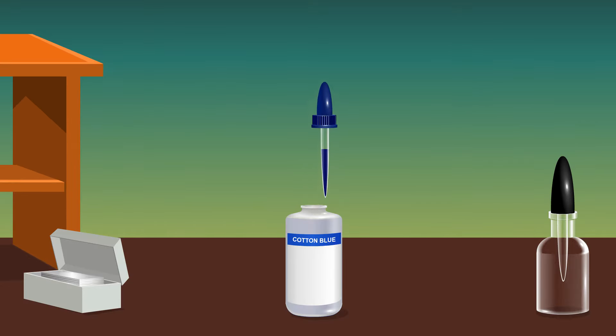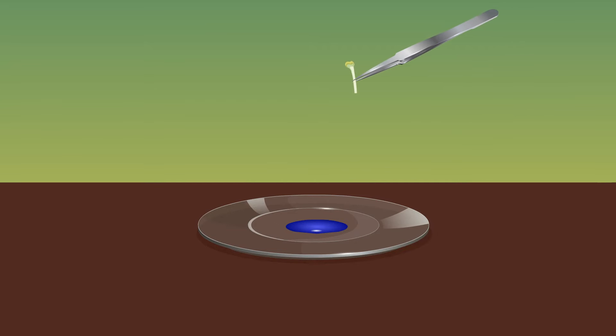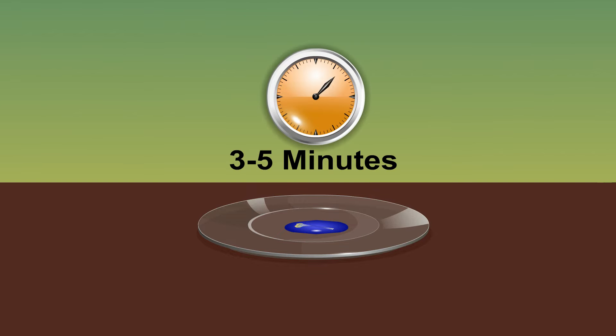Take a few drops of cotton blue solution in a dropper and transfer into a watch glass. Using forceps, transfer the stigma into the watch glass containing the cotton blue solution. Let this remain in the cotton blue solution for 3 to 5 minutes.